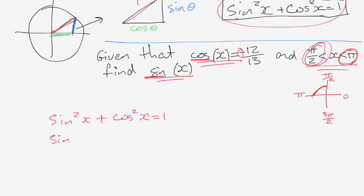This value of cos squared x I can write as sin squared x plus negative 12 over 13 squared equals 1 and thus I'm going to get my calculator out to make sure that I do this bit correctly.